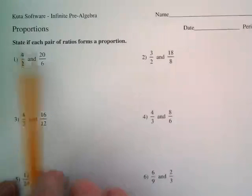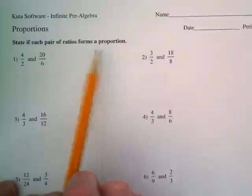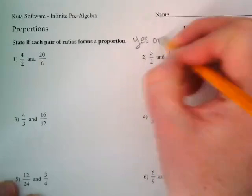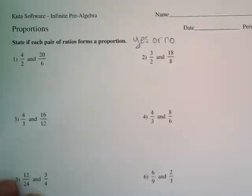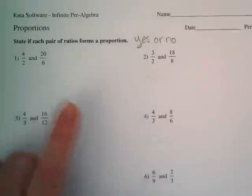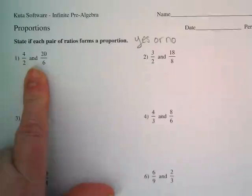This part of the paper says state if each pair of ratios forms a proportion. You are going to say yes or no. If it's a proportion, that means we could change that 'and' to an equal sign. So we're checking to see if they're equal to each other.